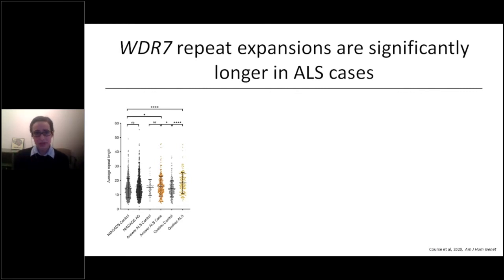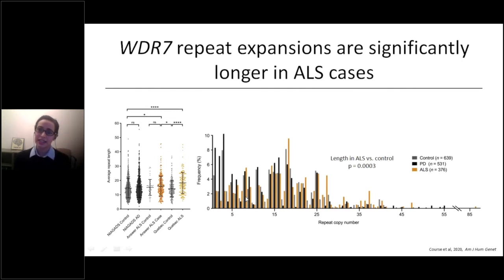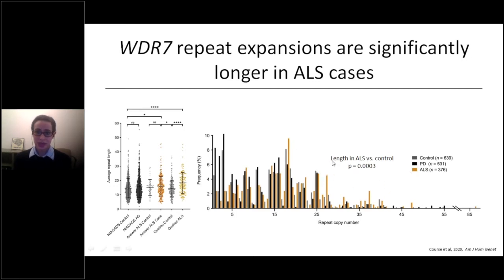We wanted to confirm this finding in a third cohort and also resolve both alleles, since in short-read whole-genome sequencing you're estimating an average length. We obtained a third cohort of sporadic ALS samples from the Coriell Institute and performed PCR amplification of the repeat region, resolving both alleles in most cases. The sporadic ALS cases, shown in orange, again showed that this repeat expansion was significantly longer in cases. Together, this suggests that this repeat plays some role in modifying disease susceptibility.